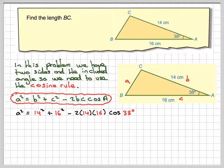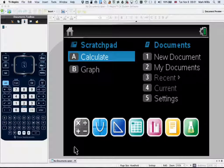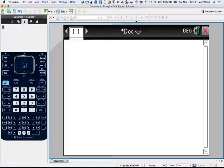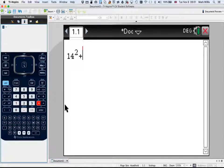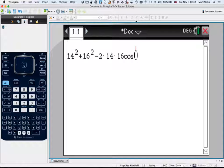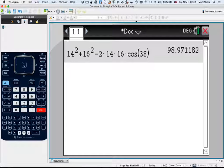Right, we can jump straight over to our calculator for this. We're going to go into our calculator and select calculation mode and then put the numbers in. We're going to get 14 squared plus 16 squared minus 2 times 14 times 16. And I want a trig function, so trig, cos 38, and then press enter. And we get an answer of 98.971182.